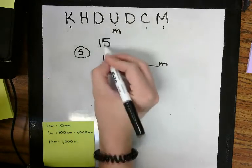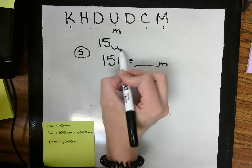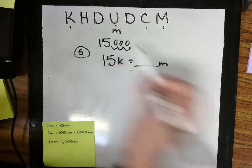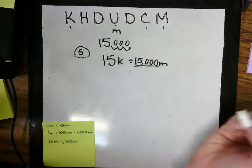15 kilometers, moving 1, 2, 3 places to the meters. 1, 2, 3. Remember, we add zeros in those spaces when we go to the right. So that tells me it's 15,000 meters.